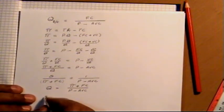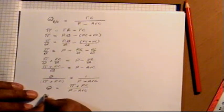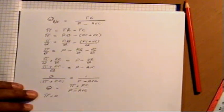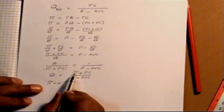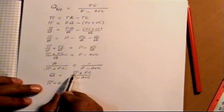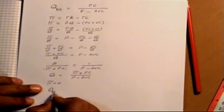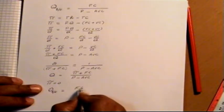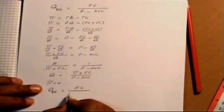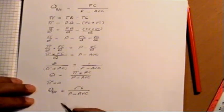Now at the breakeven point, the value of profit is equal to 0. So we are substituting this 0 value for profit. Therefore, q breakeven - meaning breakeven quantity - is equal to fixed cost divided by price minus average variable cost.